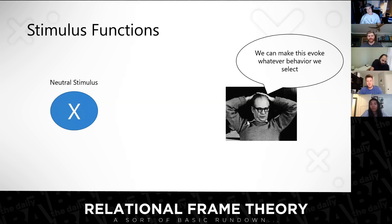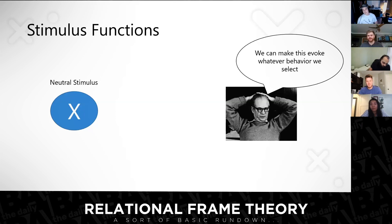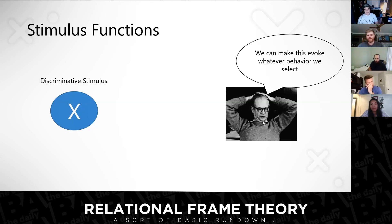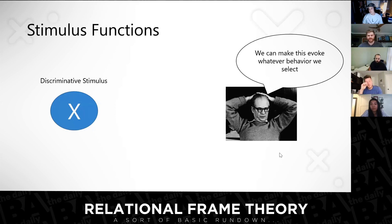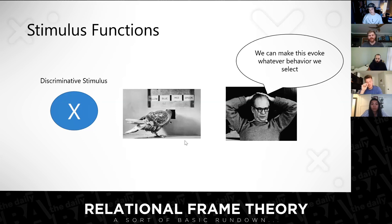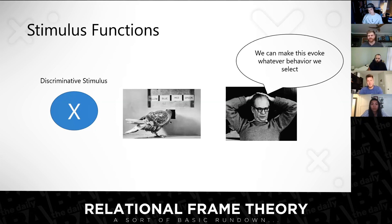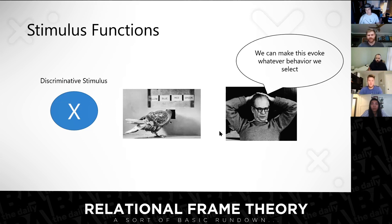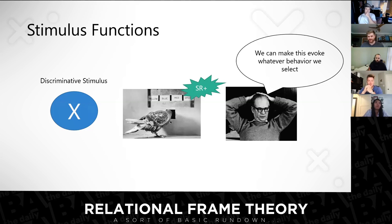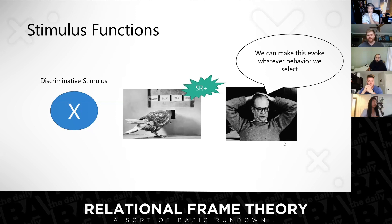Skinner showed up and said we can make this neutral stimulus — whatever it is — evoke whatever behavior we select. We can call it, for example, a discriminative stimulus. It makes the pigeon turn in circles or peck a disc. He showed some cool stuff, like pigeons can discriminate colors, words, images, and so on — all of that maintained by reinforcement. In the context of pigeons, positive reinforcement: if it picks the correct color, it gets a reward.